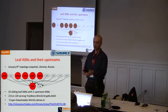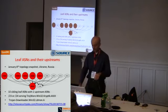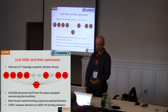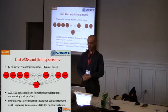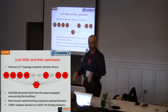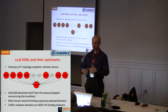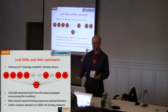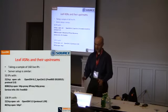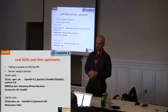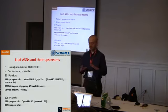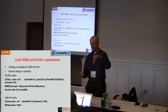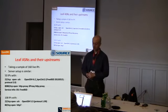Entire /23s and /24s were serving the same payload. Before any domain started resolving to these IPs, they were already hosting the payload. The VirusTotal report confirmed this. Moving forward about a month and a half, one of the upstream providers detached itself and stopped announcing the prefixes of those leaf ASNs. More leaf ASNs started hosting suspicious payloads, and if you fingerprint and map out the infrastructure, they mostly have the same fingerprint — indicating they were set up in bulk.